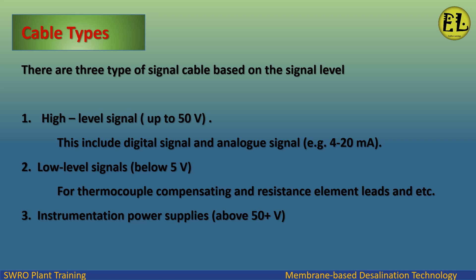There are three types of signal cable based on signal level. High level signals, up to 50V, include digital signals and analog signals, e.g. 4 to 20 mA.